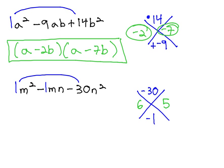However, 6 times 5 is 30, and if the 6 is negative, we end up multiplying to negative 30 and adding to negative 1. We have found the pair of numbers that makes this work.